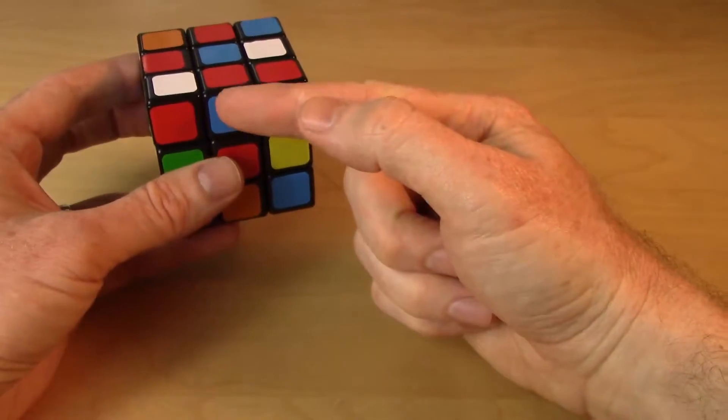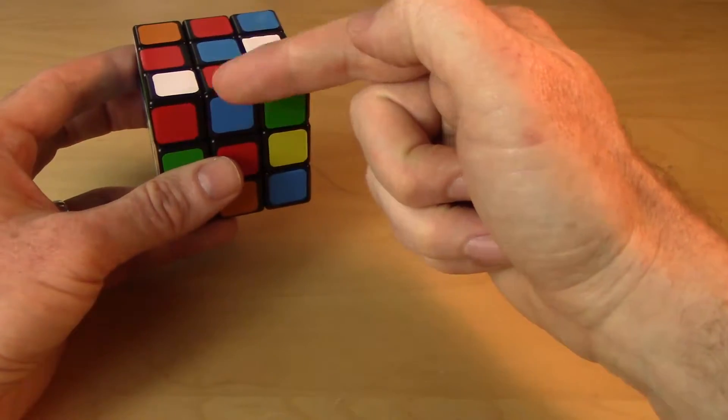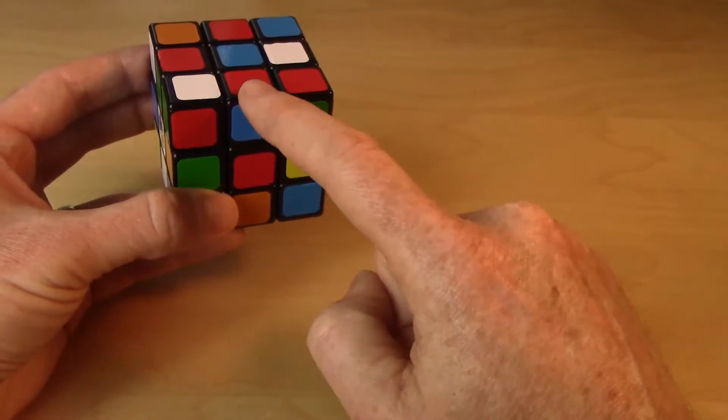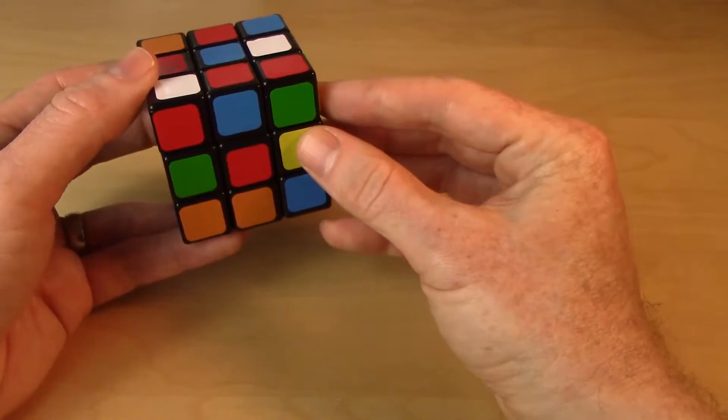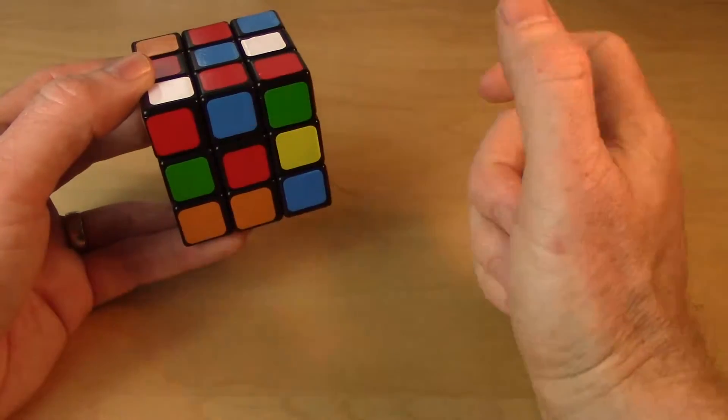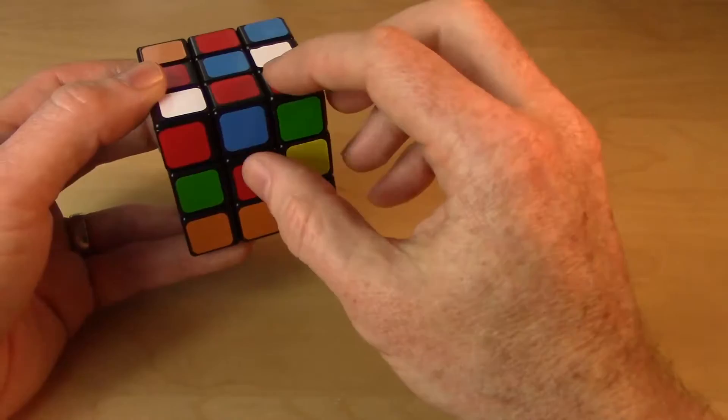So maybe I'll start with this one since it's already up here. This is the blue red one. It's in the right location, it's just not in the right orientation. So what we'll have to do is move it out of there and then bring it back in when it's been flipped over.